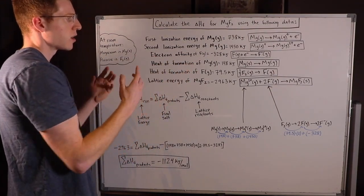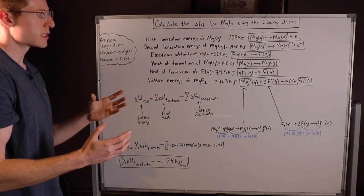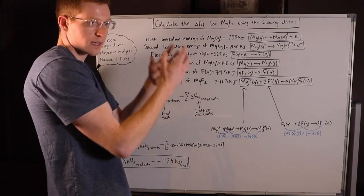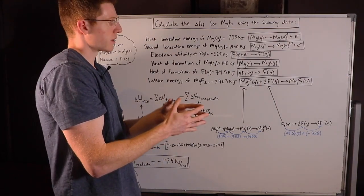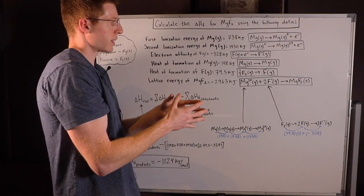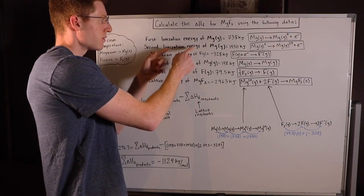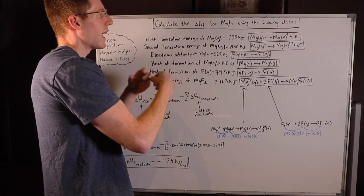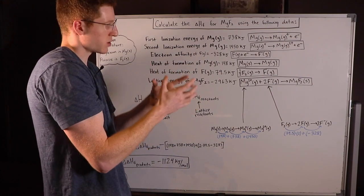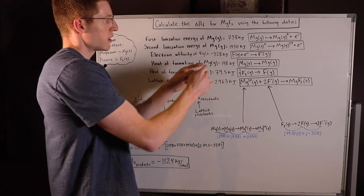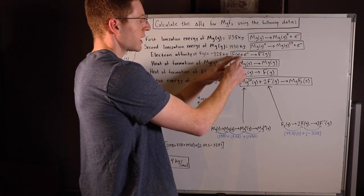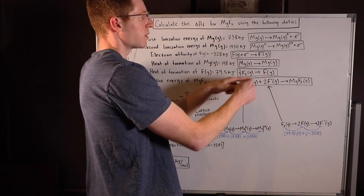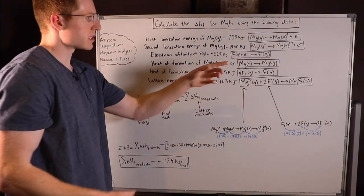The electron affinity of fluorine gas is adding an electron to fluorine gas. Electron affinity is the opposite of ionization energy — this is when you add an electron to something. So we take fluorine gas, add an electron, and now it's going to be fluorine minus gas.